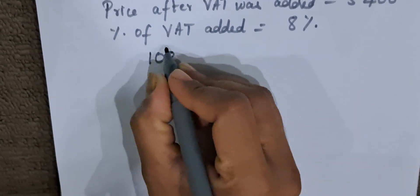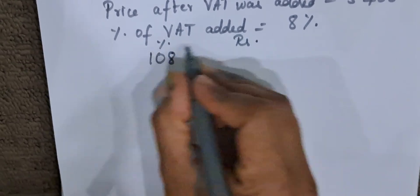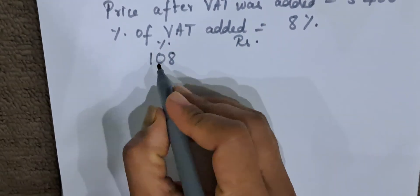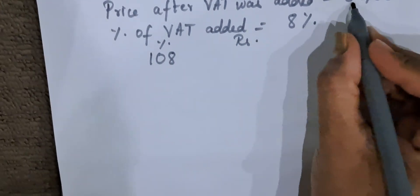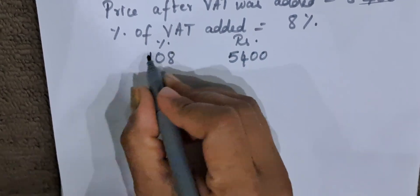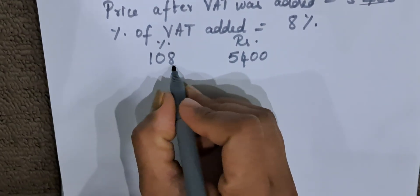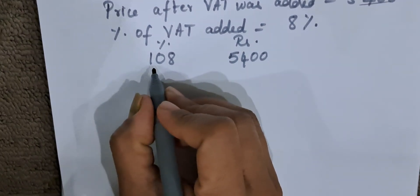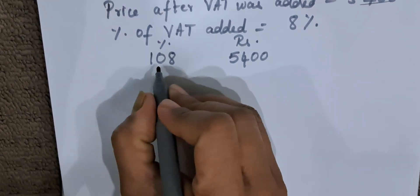So this is percentage and this is rupees. We will make two columns: percentage and rupees. When it is 108%—108% means 5,400. They are telling us when the VAT is added it has become 5,400, means 8% tax is added and 100% is for the cost of the hairdryer. So together it will become 108%.